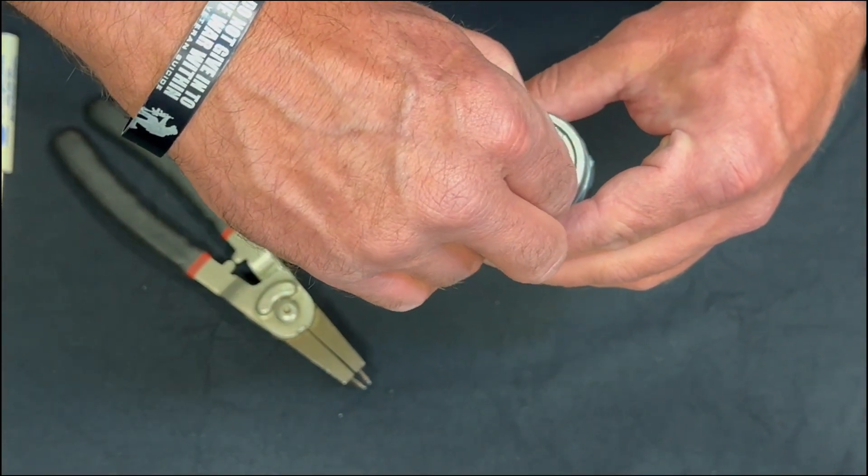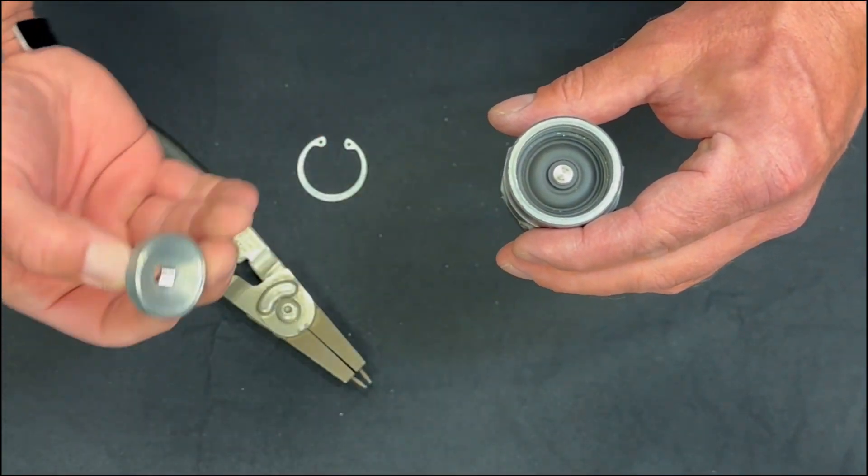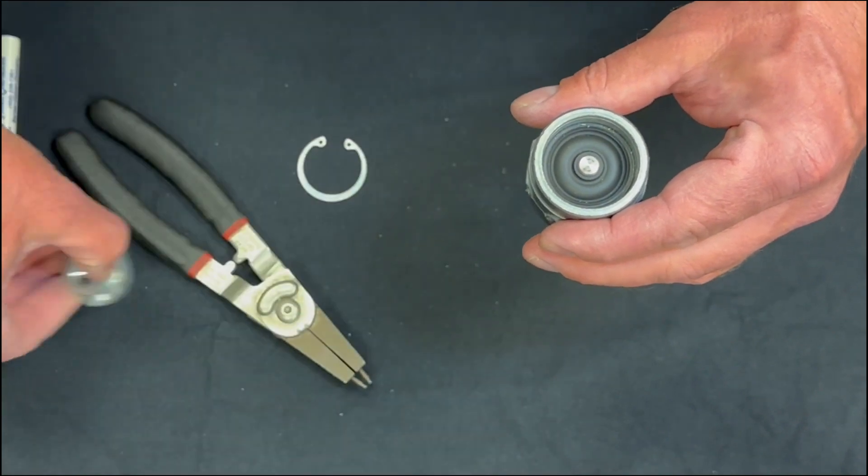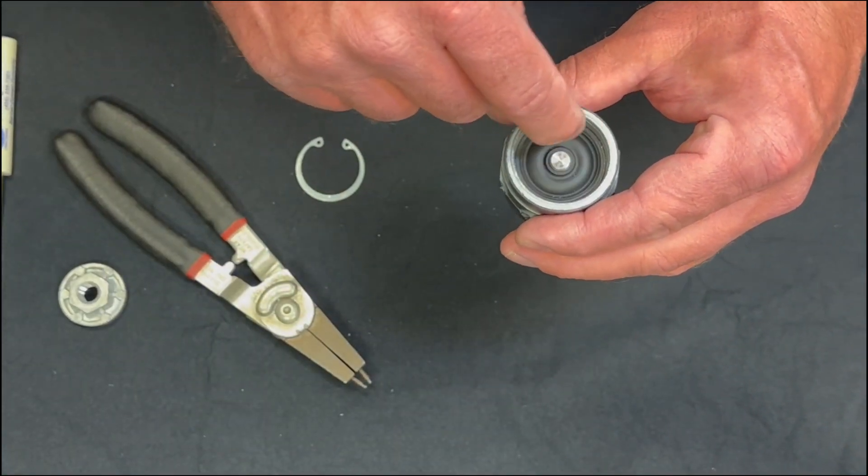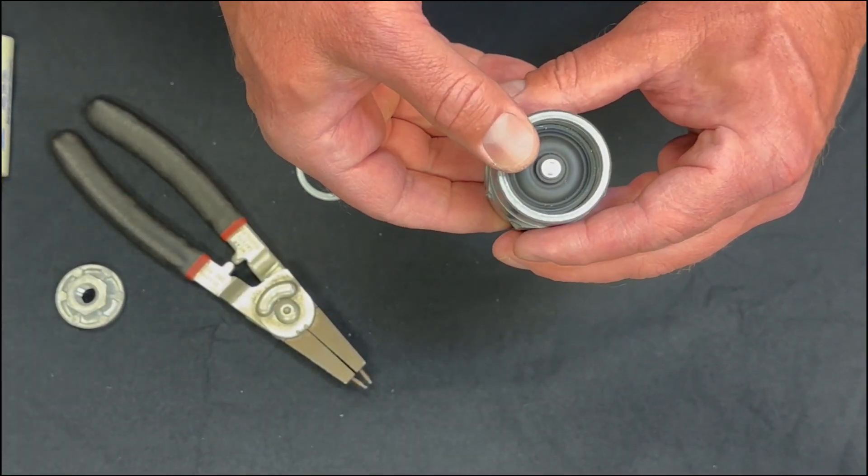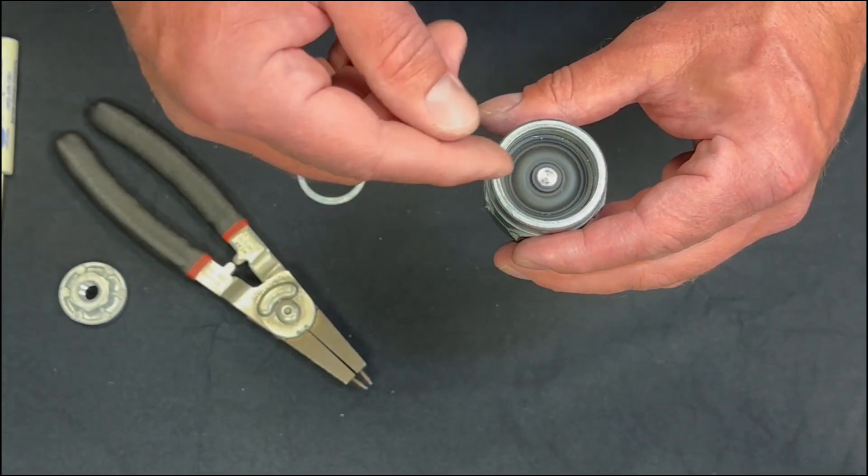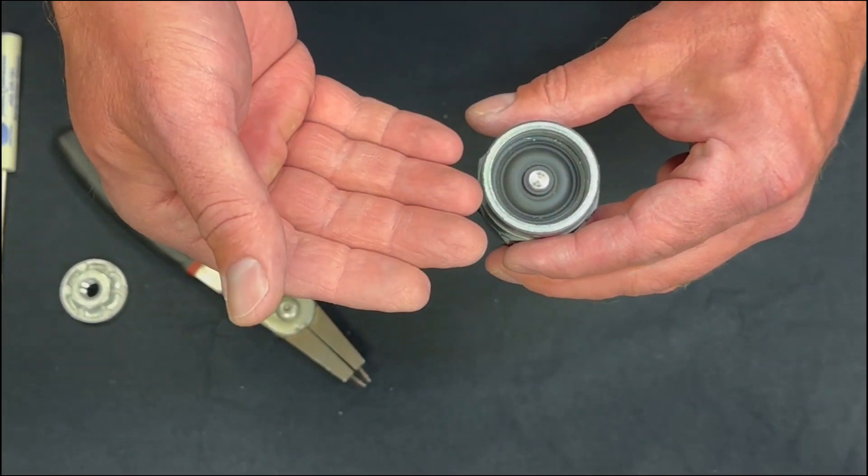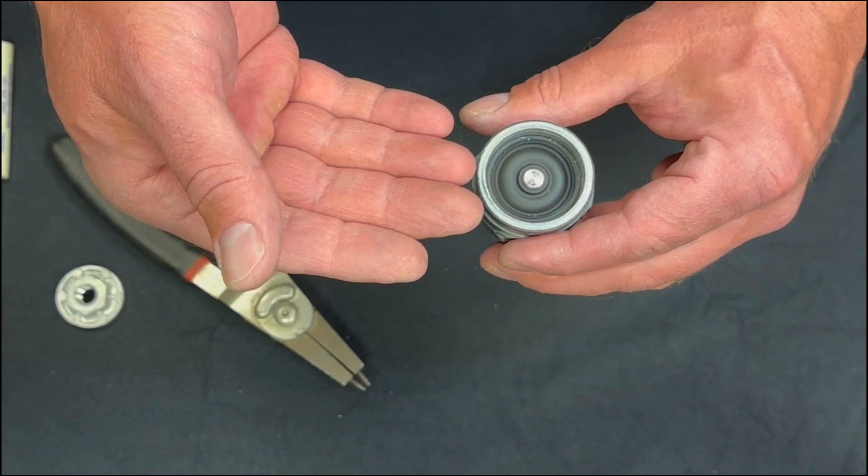Then you take the top cap of the diaphragm operated pilot valve, remove it, check for any scarring, and then you'll inspect the diaphragm of the pilot valve itself. You're going to be looking for tears, twisting, holes, or any kind of distortion that's going to cause the pilot valve to malfunction.